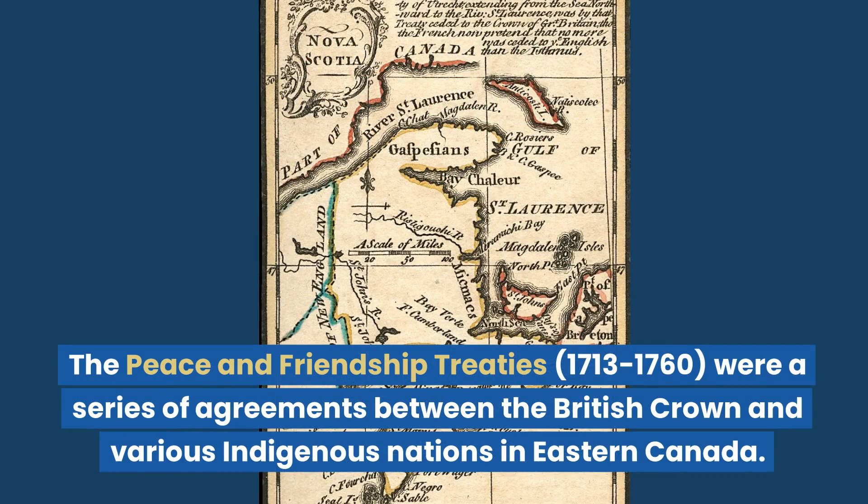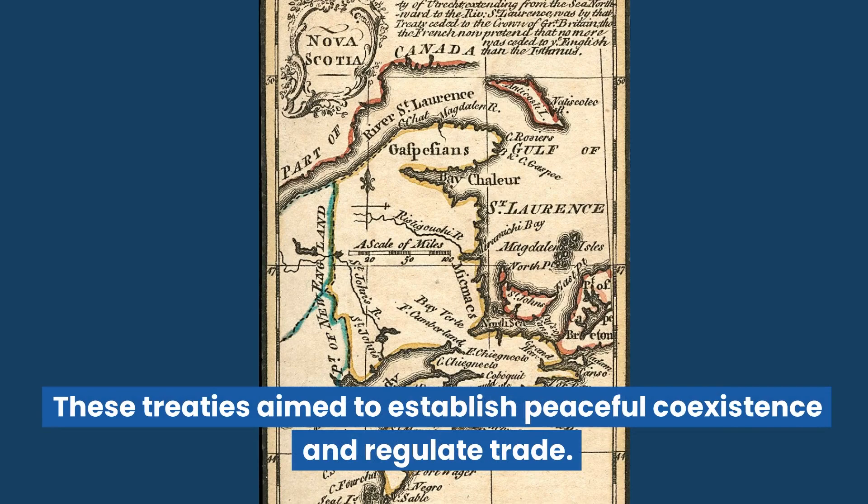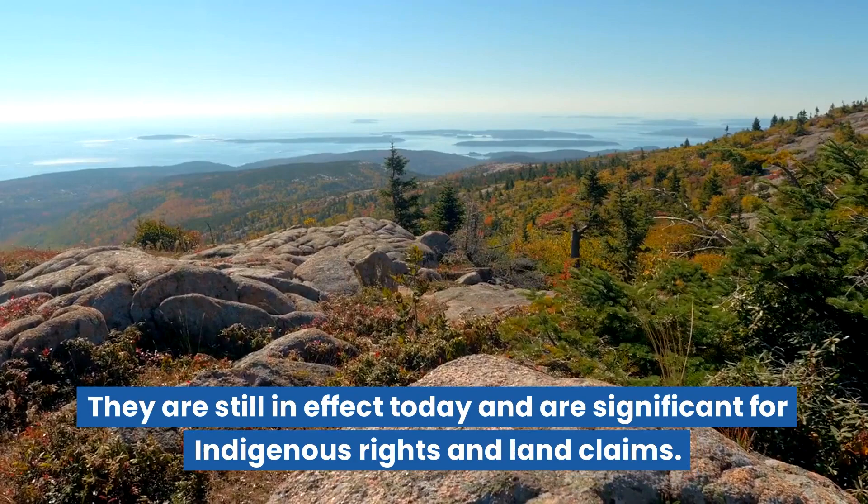The Peace and Friendship Treaties of 1713 to 1760 were a series of agreements between the British Crown and various Indigenous nations in Eastern Canada. These treaties aimed to establish peaceful coexistence and regulate trade. They are still in effect today and are significant for Indigenous rights and land claims.